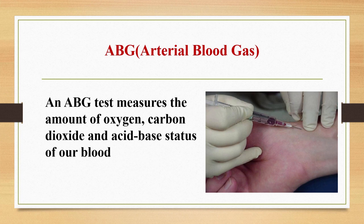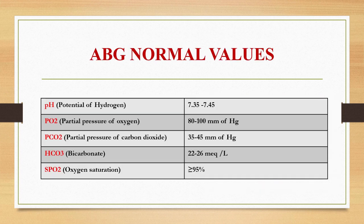The full form of ABG is arterial blood gas. It is a test used to measure the amount of oxygen and carbon dioxide dissolved in the blood. It is also used to assess the acid-base status of our blood. In the following slides, I am going to explain how to interpret an ABG. In order to interpret an ABG, we should know these normal values: pH, PO2, PCO2, bicarbonate, and oxygen saturation.